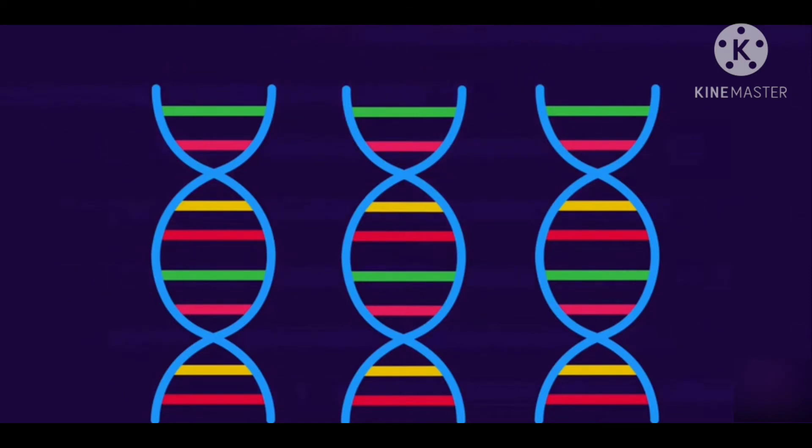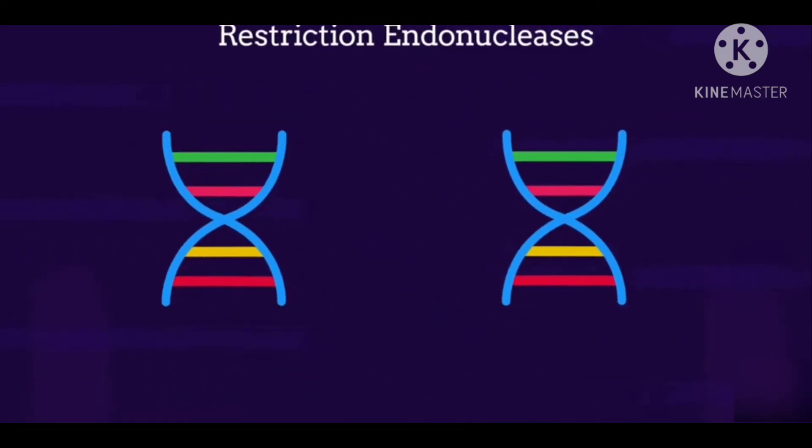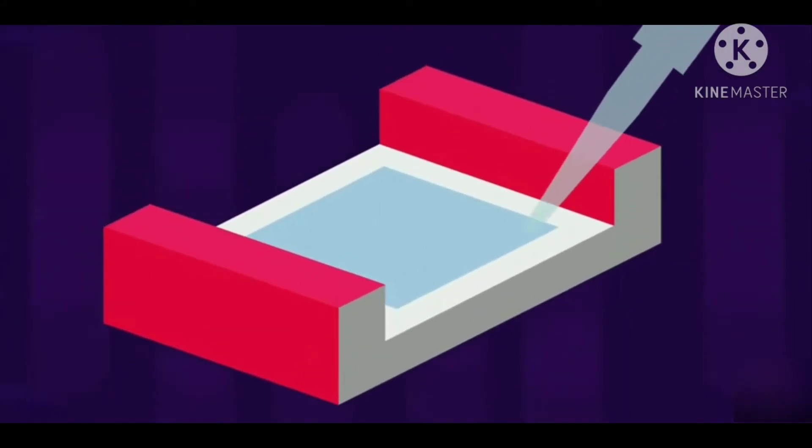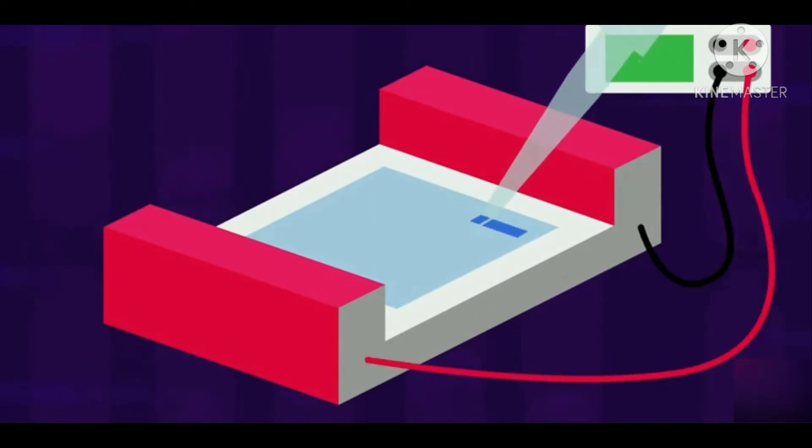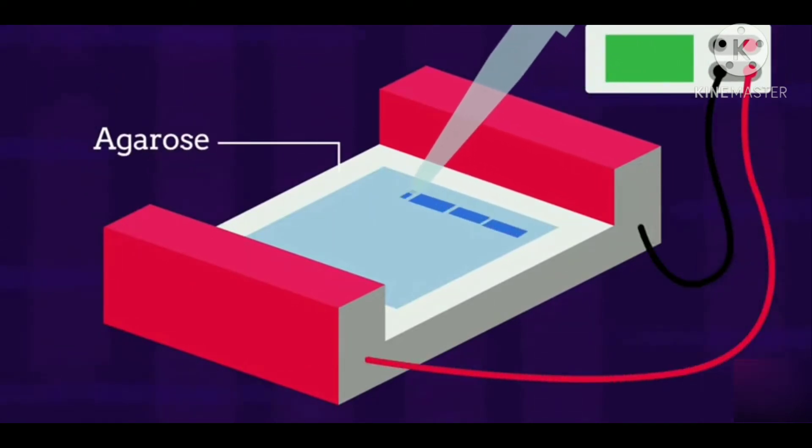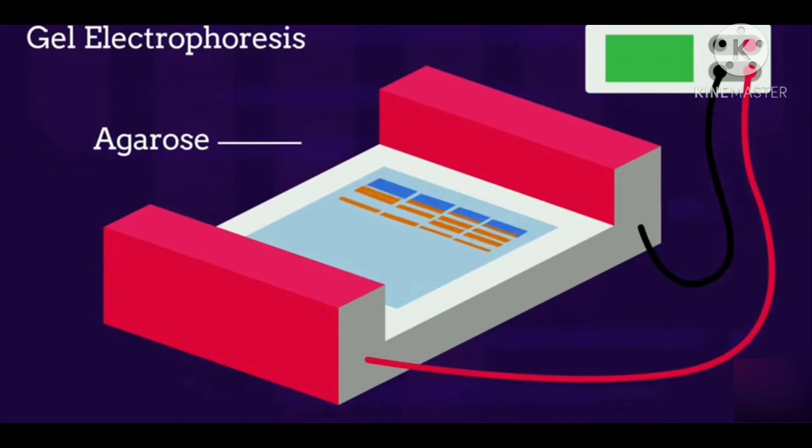Special enzymes called restriction endonucleases are used to cut the DNA up into different size pieces. The DNA samples are then put into wells in a special gel called agarose for the process of gel electrophoresis which separates the DNA fragments by size.